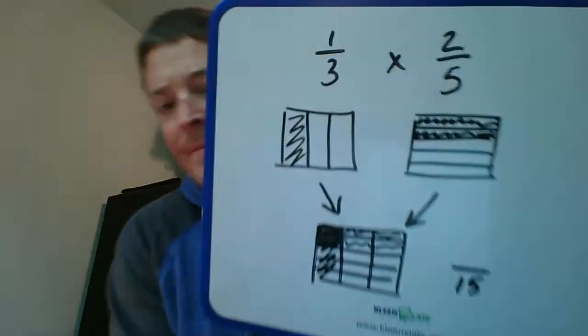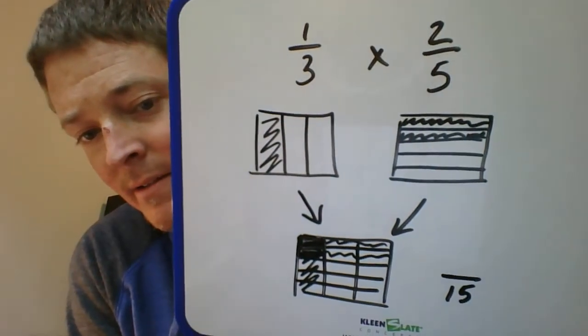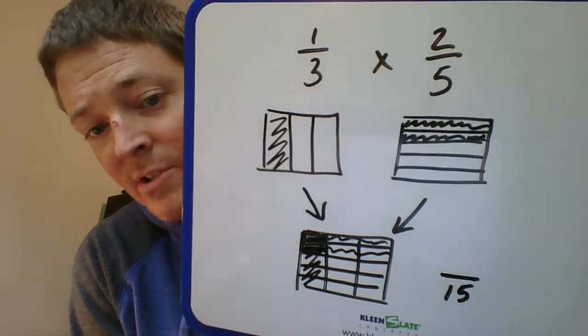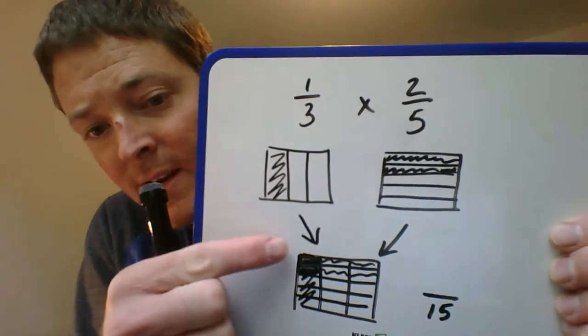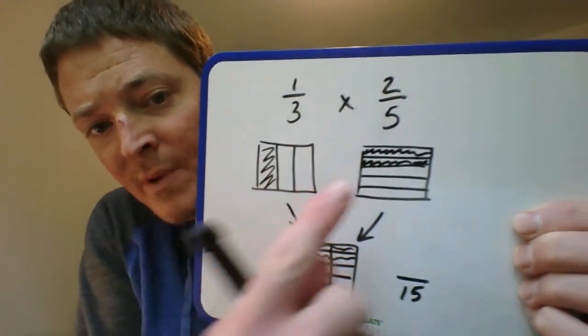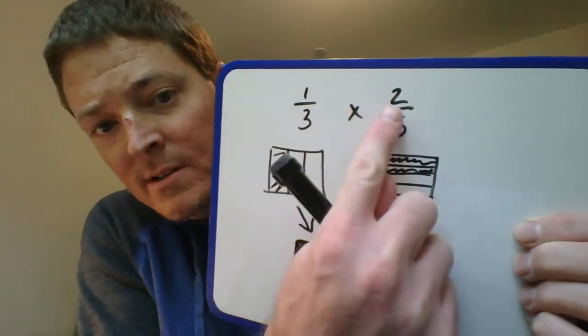All right, and hopefully you're seeing that that's actually two little boxes in that cell, right? One, two. Which makes sense, because up here, what's one times two? That's going to be two.